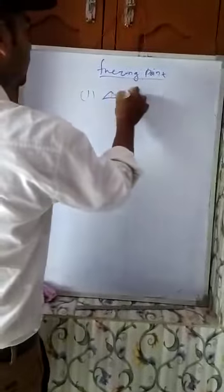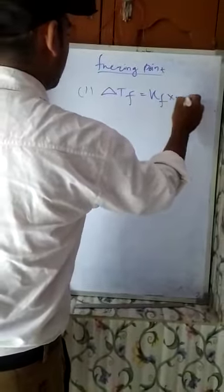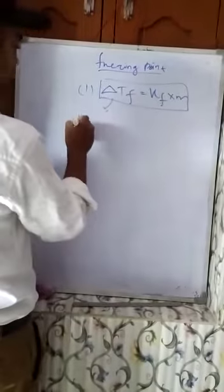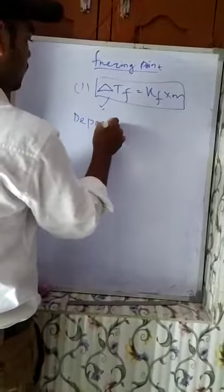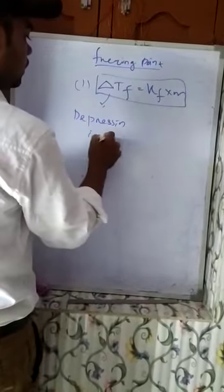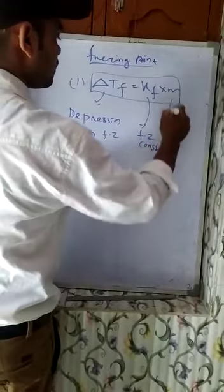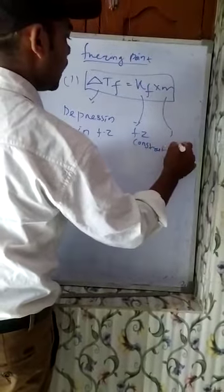So what is the freezing point? We know the expression: ΔTF = KF × m. This is the formula, where ΔTF is the depression in freezing point, KF is the freezing point constant, and m is molality.